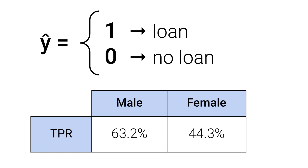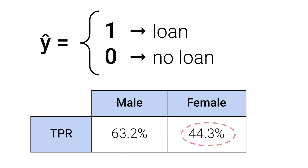Take a look at these true positive rates for a model used to automatically give out loans. They tell us 63.2% of males who should have been given loans were given loans. However, this figure is only 44.3% for females. Clearly, this model is being unfair towards women. In fact, in using true positive rates in this way, we are applying a definition of fairness called equal opportunity.